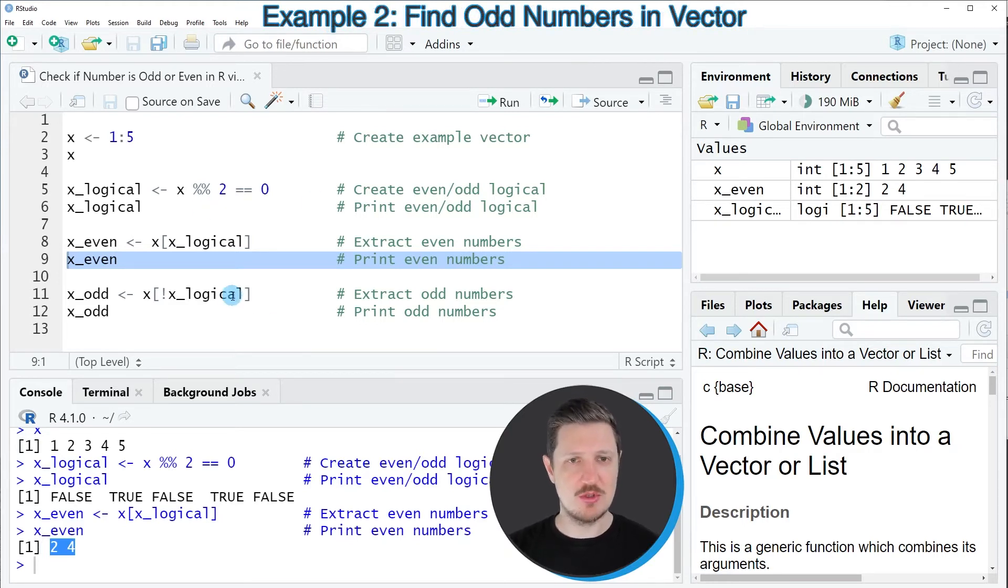It's also possible to use this logical vector object that we created in line 5 to create a vector containing only the odd numbers of our input vector. We can do that by simply specifying a bang sign in front of the logical vector.